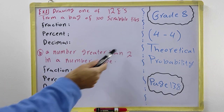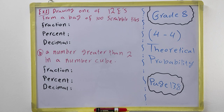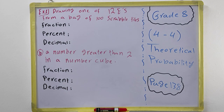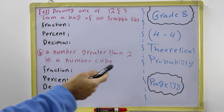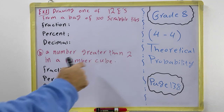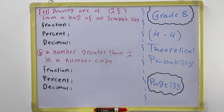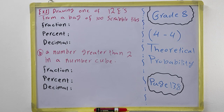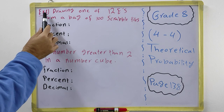Normally, theoretical probability and experimental probability are solved the same way. But in real life, experimental means you actually do the experiment. Theoretical means we didn't do the experiment — we find the probability of something happening theoretically. For solving 4.3 and 4.4, both experimental and theoretical probability would be solved in the same way.